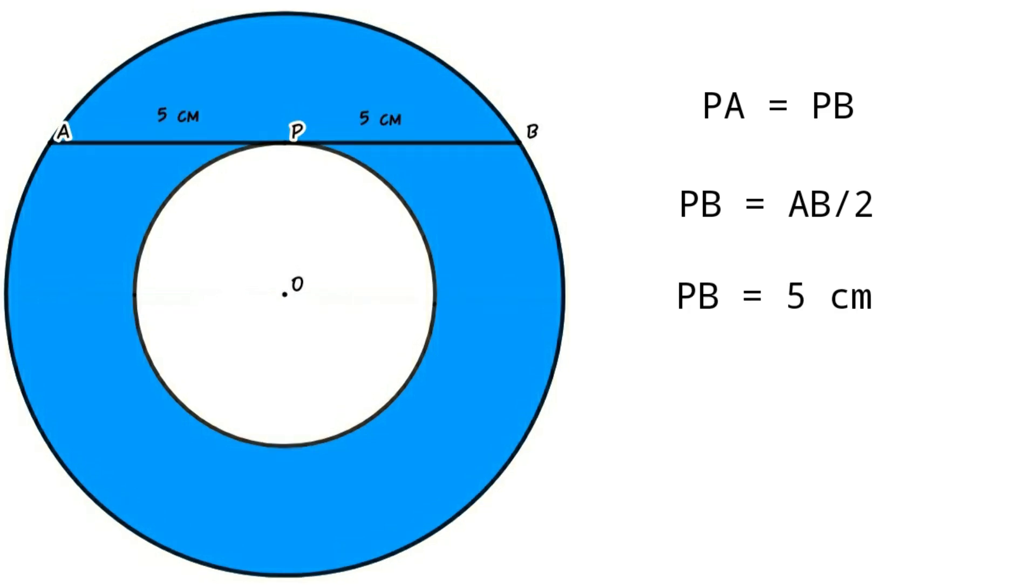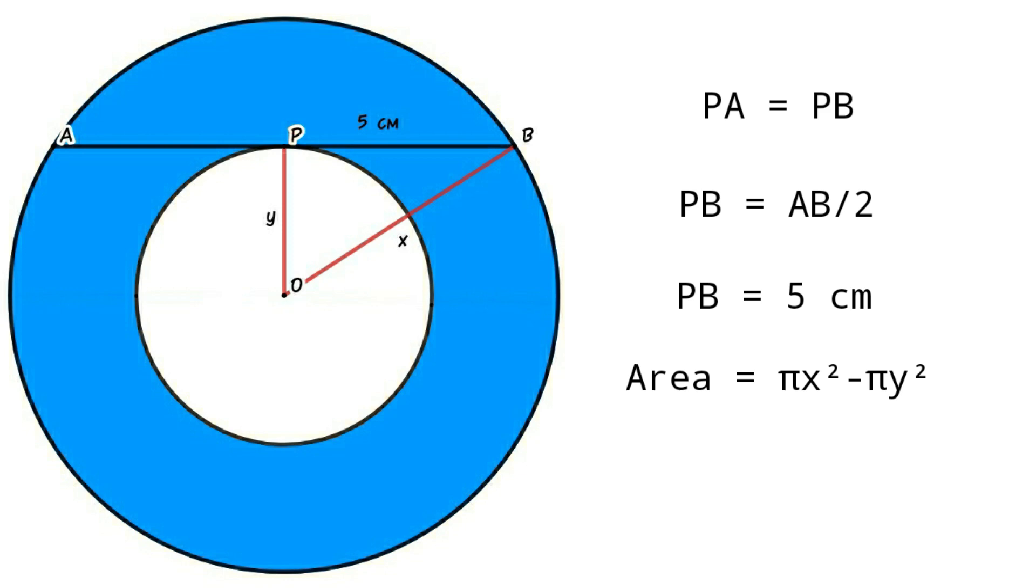Area of the blue region equals area of bigger circle minus area of smaller circle. Area equals π x² minus π y², or area equals π into x² minus y².